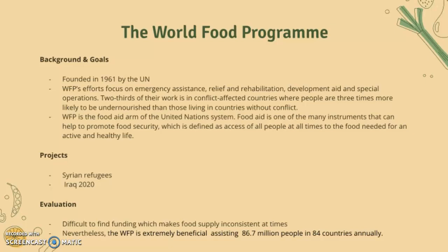The World Food Programme: background and goals. Founded in 1961 by the UN, the WFP's efforts focus on emergency assistance, relief and rehabilitation, development aid, and special operations. Two-thirds of their work is in conflict-affected areas where people are three times more likely to be undernourished than those in countries without conflict. The WFP is the food aid arm of the UN, and food aid is one of the many instruments that can help promote food security, defined as access of all people at all times to the food needed for an active and healthy life.